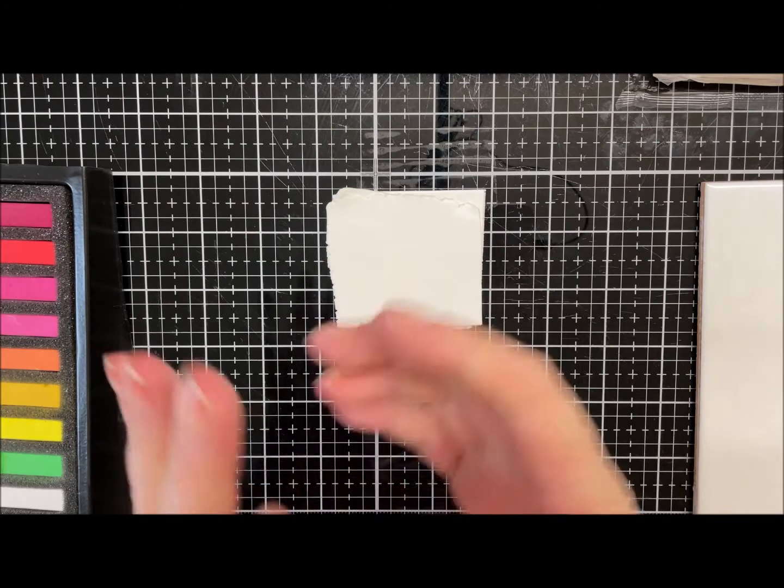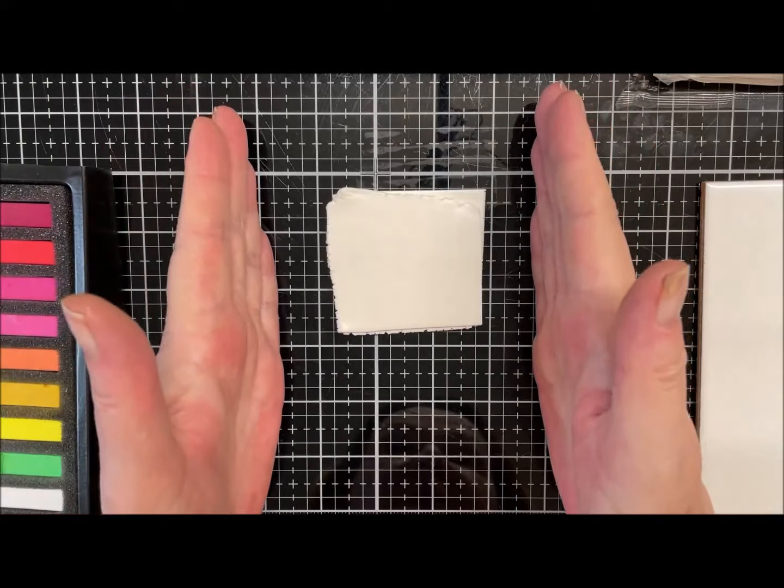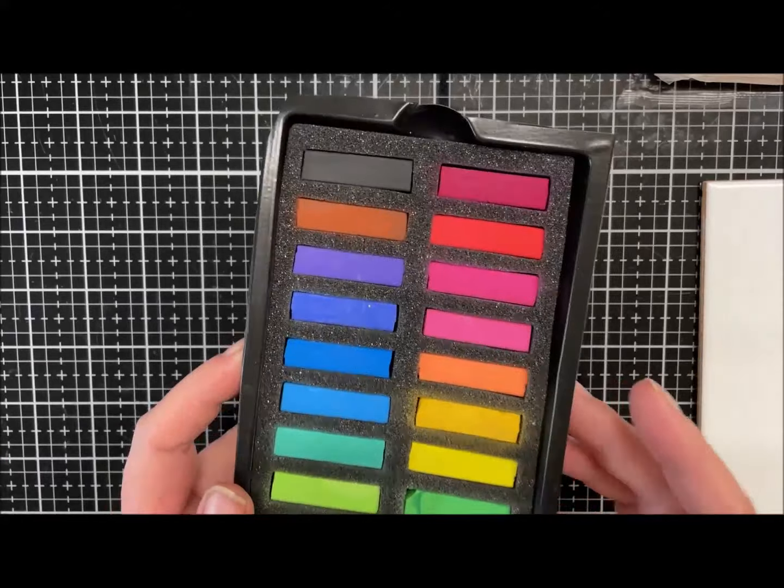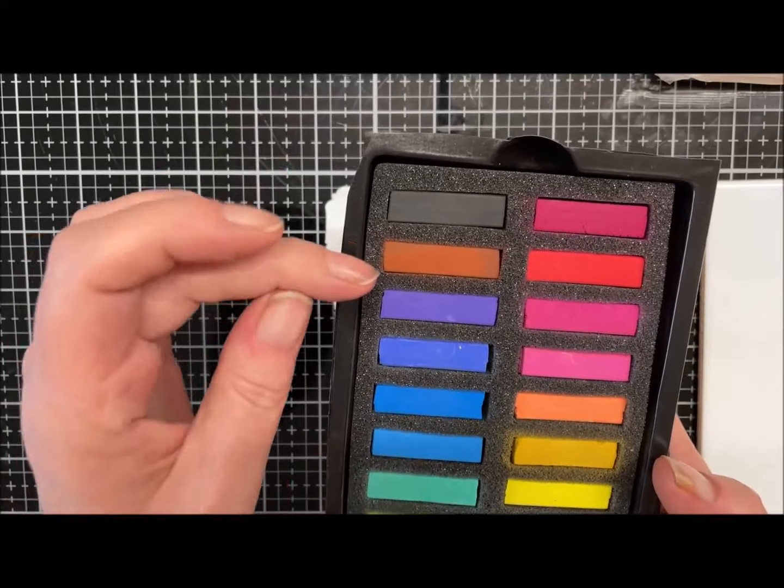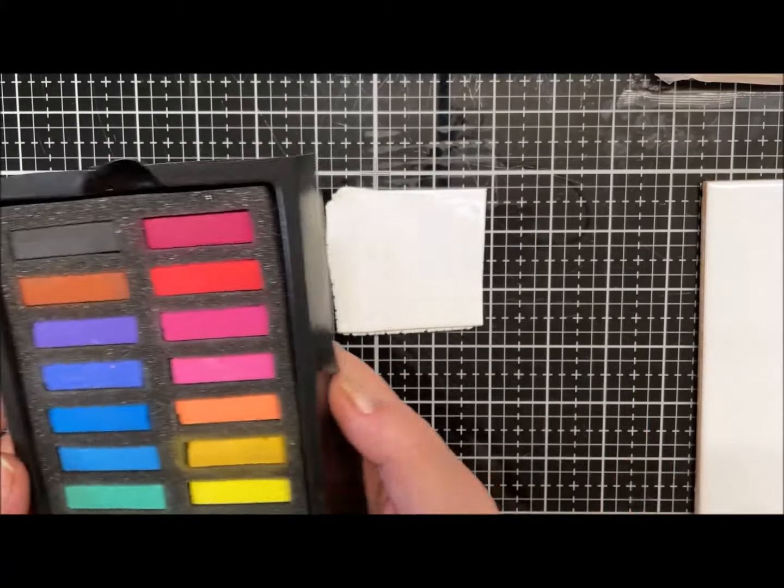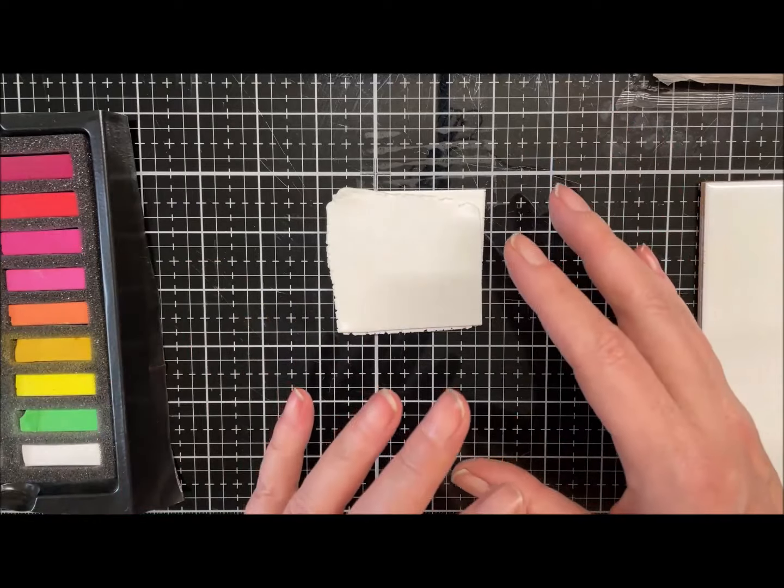So we've got some clay. I'm going to use my chalk pastels, and I'm probably just going to use this burnt umber and black to try and get a really subtle aged look.